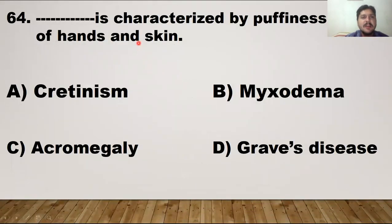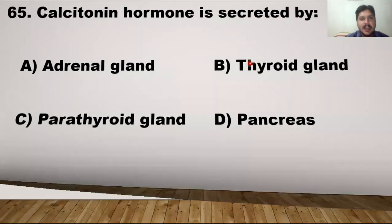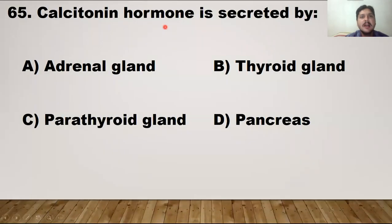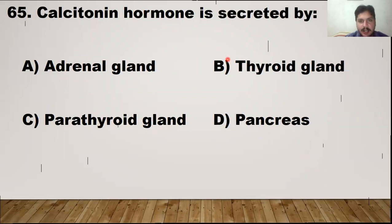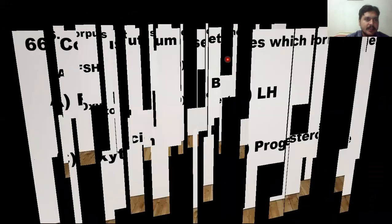Puffiness of hands and skin is characterized by myxedema — a condition in which these symptoms can be observed. Calcitonin hormone is not secreted by the adrenal gland or parathyroid gland. The right answer is the thyroid gland, because the thyroid gland produces T3, T4, and calcitonin hormones. Option B is the right answer.